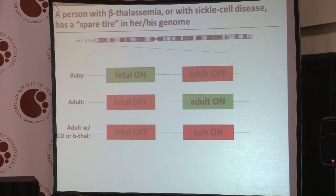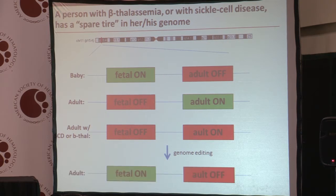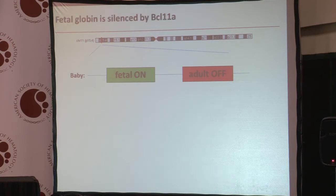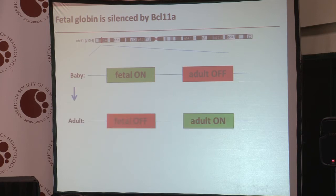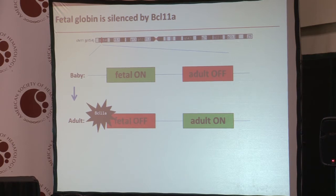So our approach — and Jeremy Rupon, who will speak after me, will also touch on this — is to use genome editing to wake up the fetal globin gene and thus alleviate or cure the patient's symptoms. A huge amount of work has gone into understanding what causes this change in gene expression. In particular, I'd like to highlight the work of Dr. Stuart Orkin at Dana-Farber and Harvard, and in brief, collapsing a decade of work to one schematic, it has to do with a protein called BCL11A, which silences the fetal globin gene.